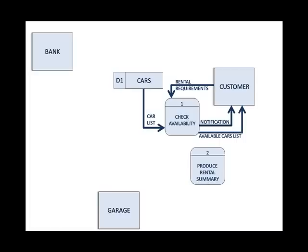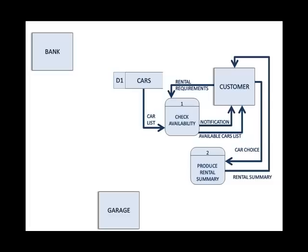Process two is to produce the rental summary — that is the output the customer sees when a car is available. The customer provided this process with their car choice, and this process gave back the rental summary. At this point the customer can choose to rent the car by providing credit card information.